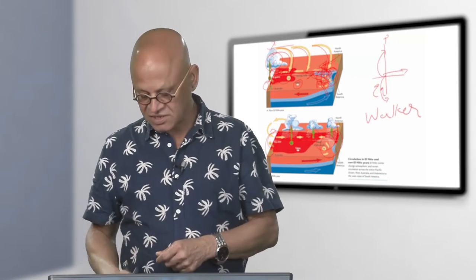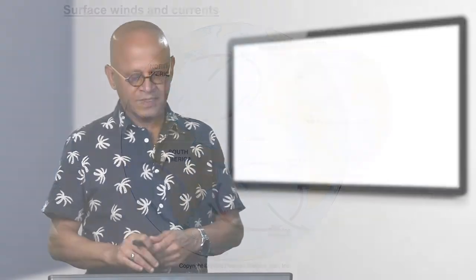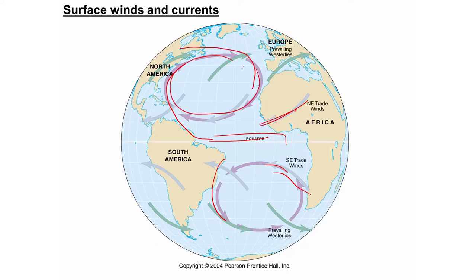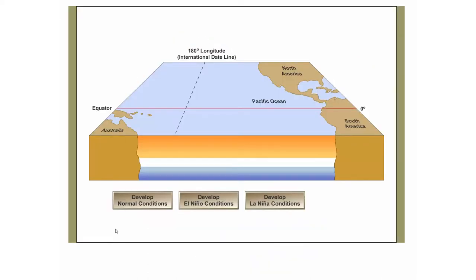That is basically how the currents are set up. The trade winds push waters west; they hit the coast and go north and south; then the westerlies push them back — this is the subtropical gyre. Tropics are here, subtropics are here, mid-latitudes here, polar regions here. The gyres are circular motions and upwelling is created basically by those winds.